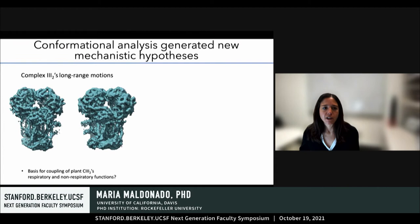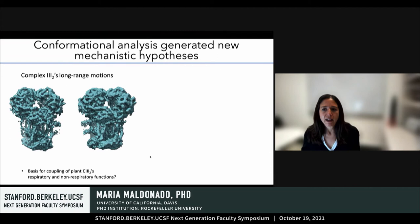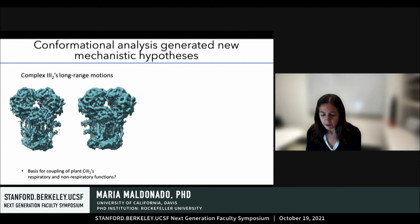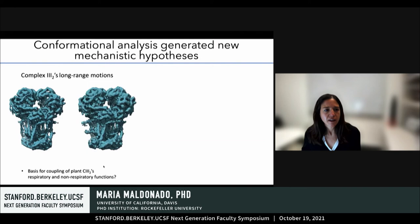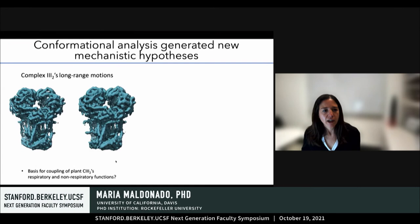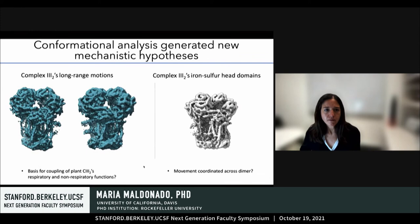In addition to using our cryo-EM particles to determine the static structures of the complexes, we used a different cryo-EM algorithm to examine the movement of the complexes, particularly focused on complex three. This analysis allowed us to generate new mechanistic hypotheses on the functions of plant complex three. Plant complex three is unique in that it has not only respiratory functions, but also non-respiratory functions. Our conformational analysis revealed complex-wide, dimer-coordinated movements, and we hypothesize that these movements form the physical basis for the coupling of complex three's respiratory and non-respiratory functions.